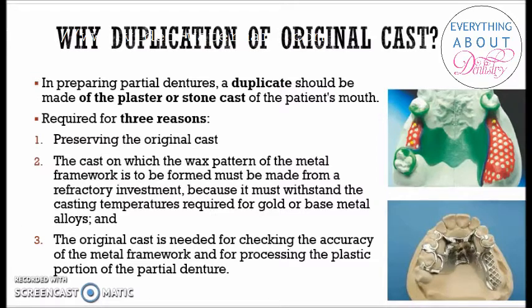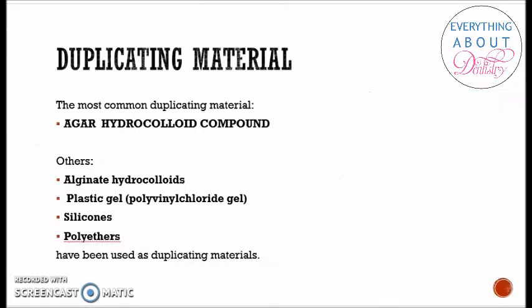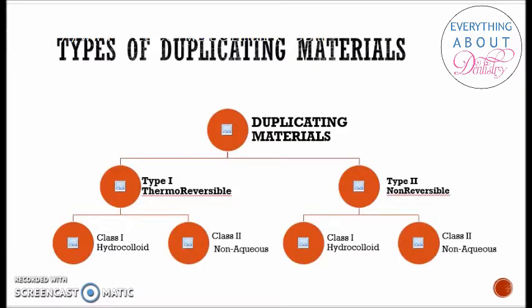Now, what are duplicating materials? The most common duplicating material is agar hydrocolloid impression material. Other materials include alginate, plastic gel, polyvinyl chloride gel, silicone impression material, and polyethers. All of these have been used as duplicating materials, but the most commonly used is agar.